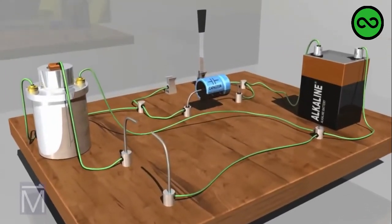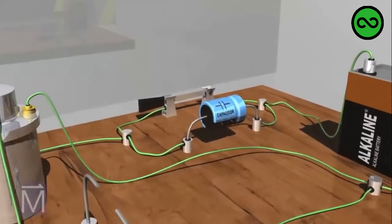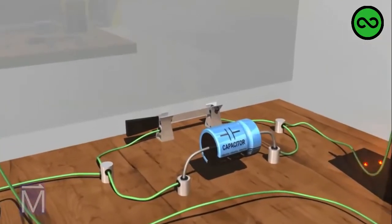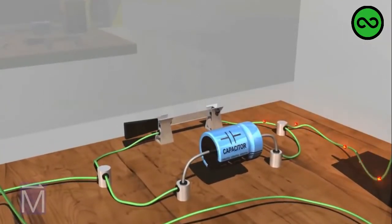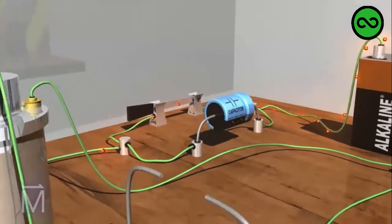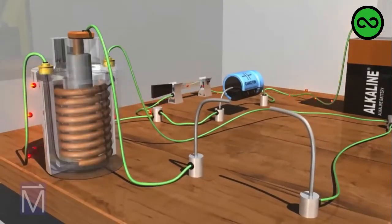First, we will close the knife switch to create a circuit that includes the battery and the induction coil. Although electrons move from negative to positive, the convention is to think of electrical current as moving from positive to negative, so that's how we'll show it here.